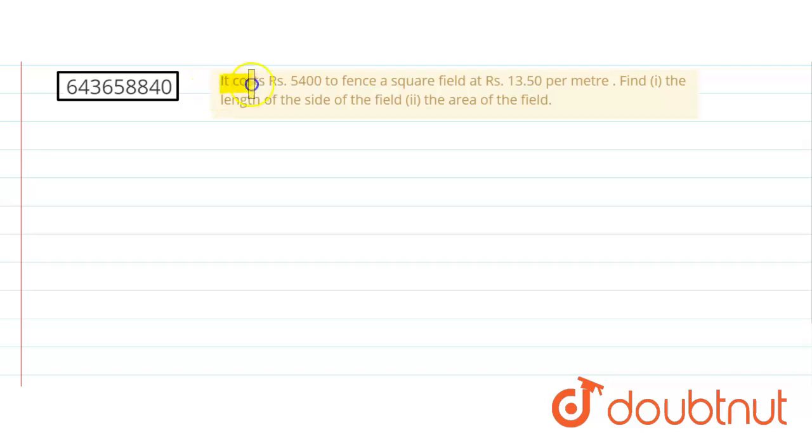Hello student, now in this question it costs rupees 5400 to fence a square field at rate 13.5 per meter. We have to find the length of the square field and area of that field.